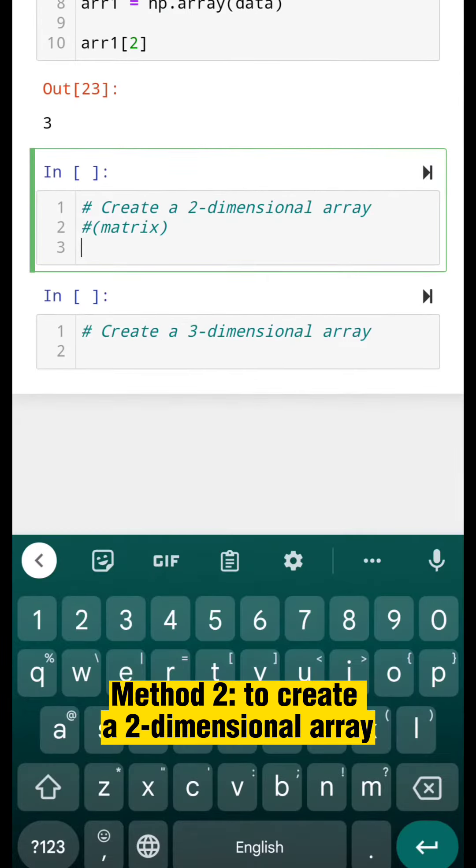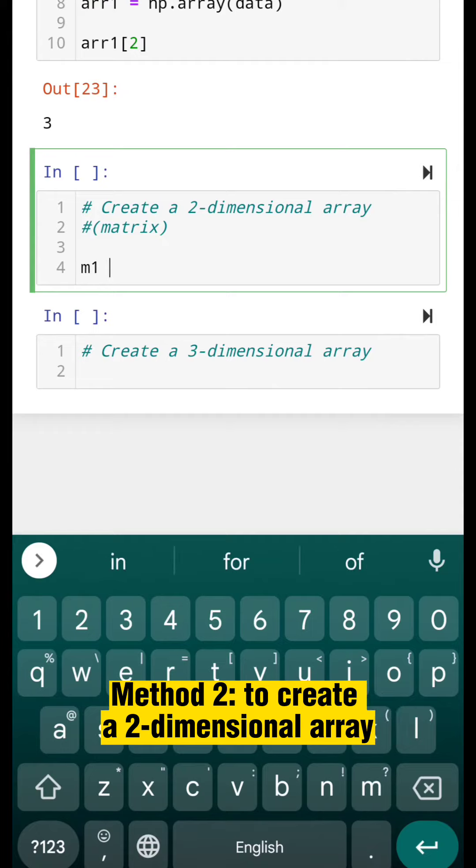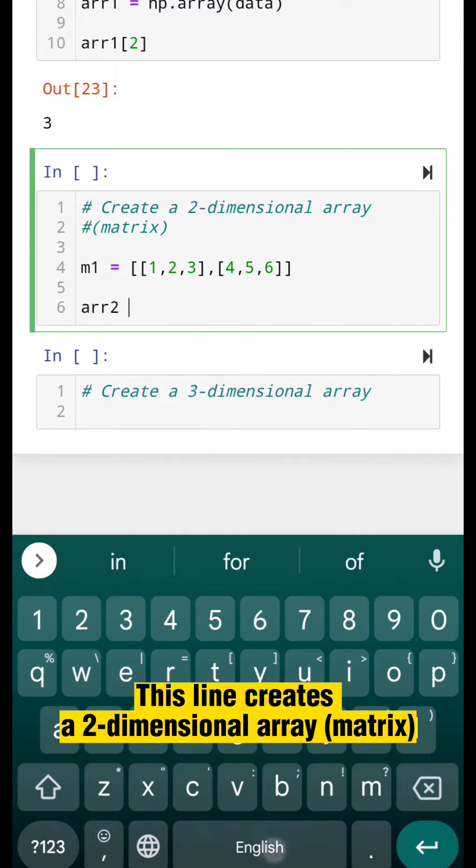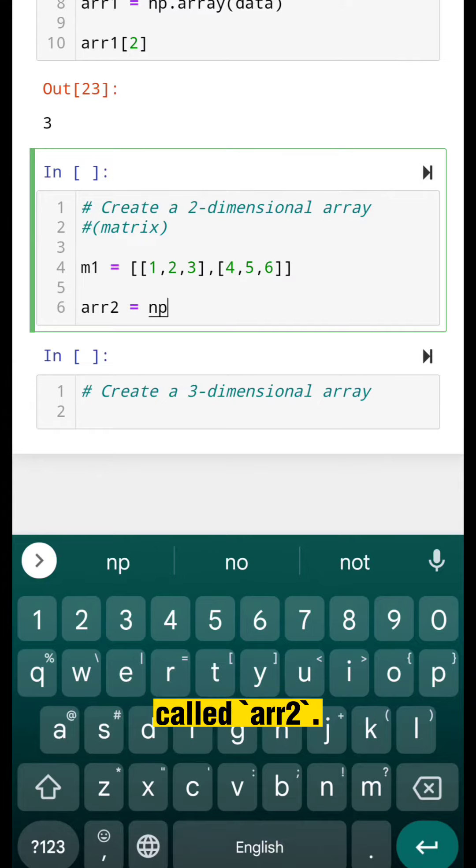Method 2: to create a two-dimensional array. This line creates a two-dimensional array matrix called arr2.